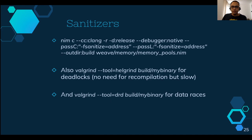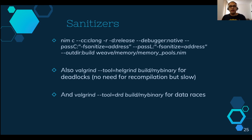You can also use Valgrind, well known for memory checks. You also have Helgrind for deadlocks and DRD for data race detection. Note that the sanitizers are 3 to 10x slower than regular code, so compile with release. Valgrind is also 3 to 10x slower than the sanitizers themselves, but it doesn't require you to recompile your binary.